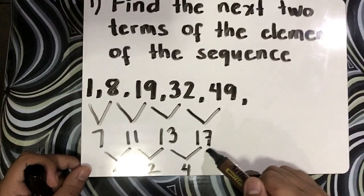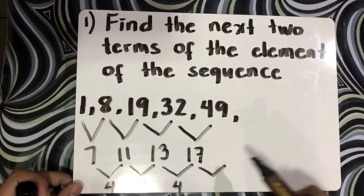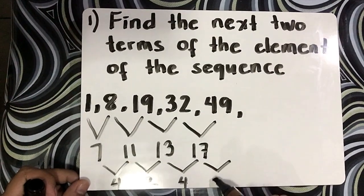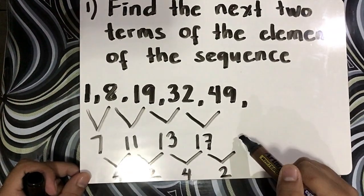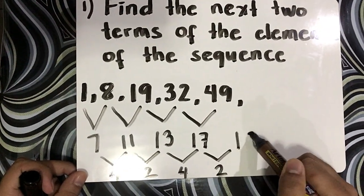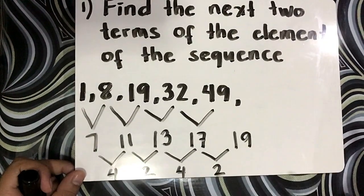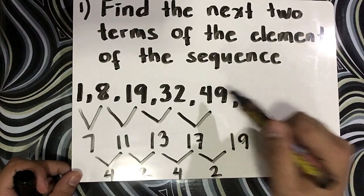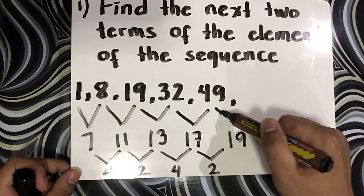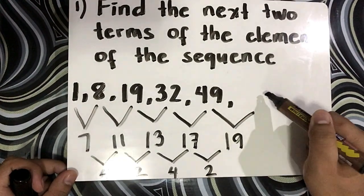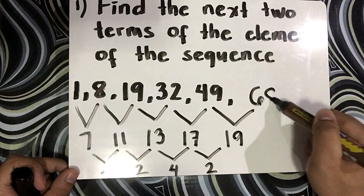So next, 17 plus 2 gives 19. We add this 19 to 49: 49 plus 19 gives you 68.